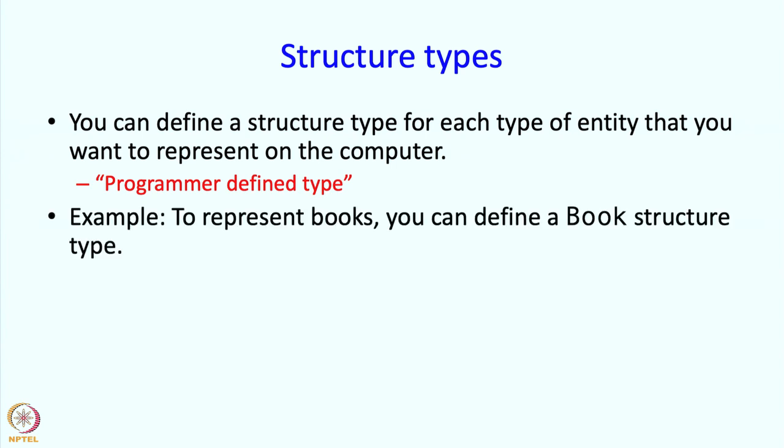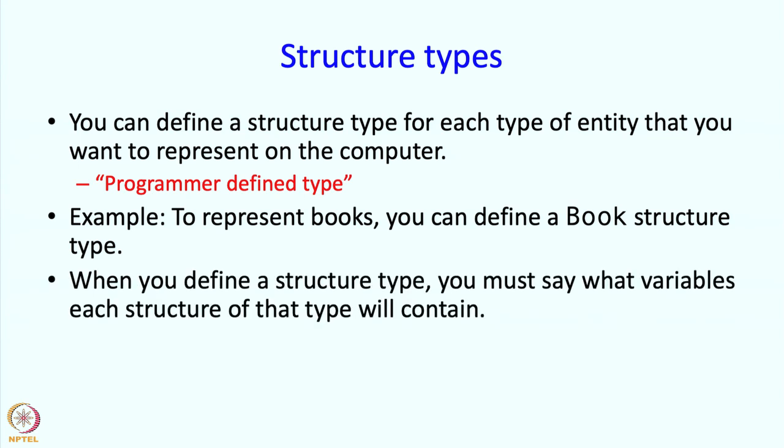And these types are what might be called programmer defined types. For example, to represent books, you can define a book structure type. When you define a structure type, you must say what variables each structure of that type will contain.